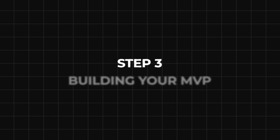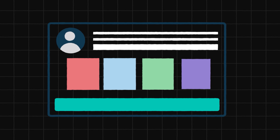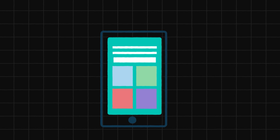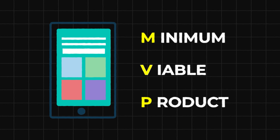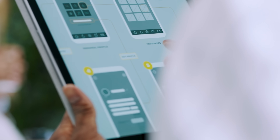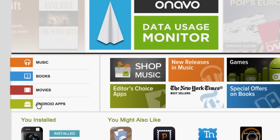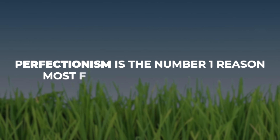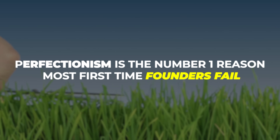Now that your idea is validated, it's time for step three: building your MVP. An MVP is a common term in the SaaS world, and it stands for minimal viable product. Your goal is to build only that one core feature that people want and to launch as fast as possible. Perfectionism is the number one reason most first-time founders fail. You will add the rest of the bells and whistles as you go. Building your MVP is the exciting part.